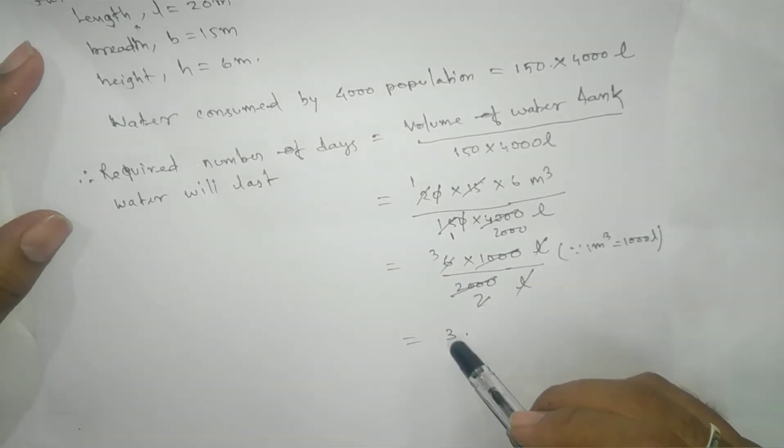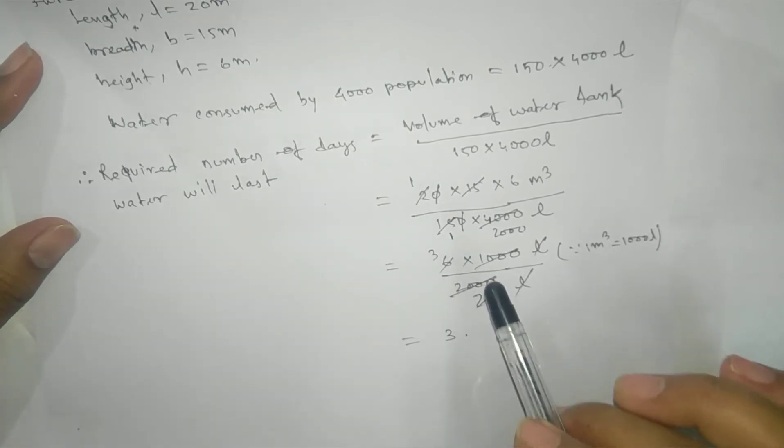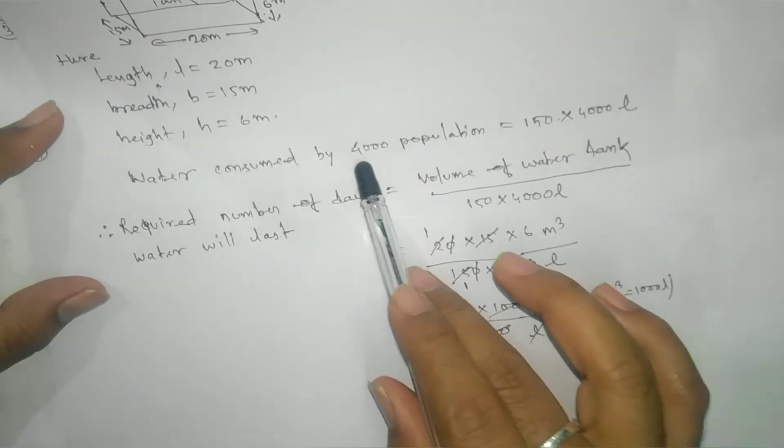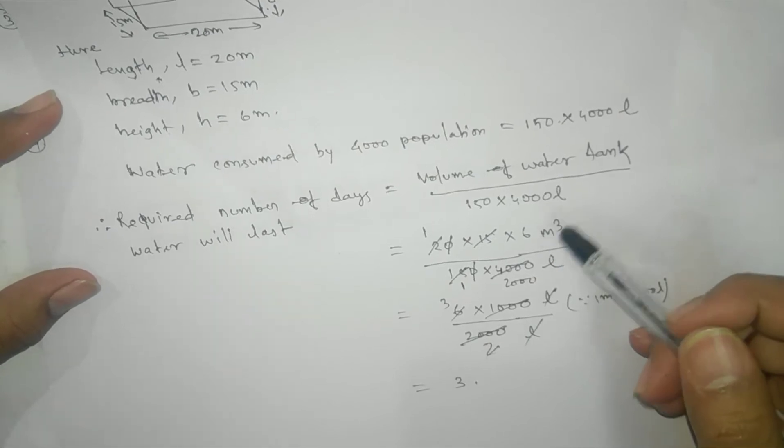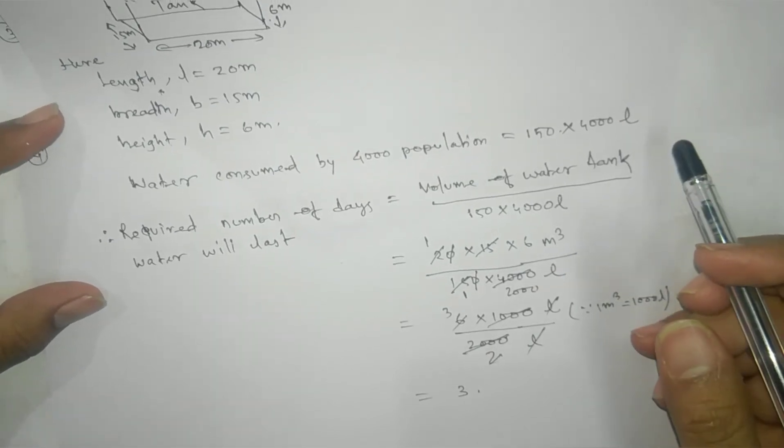After canceling and simplifying, we get 3. That means three days. In three days, water will be exhausted for 4000 population. This is your answer.